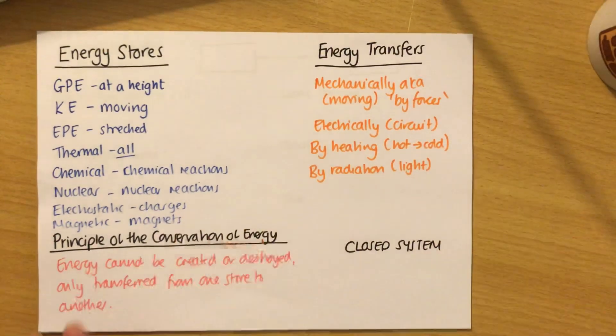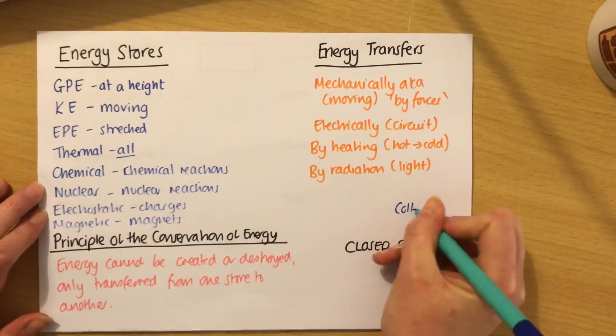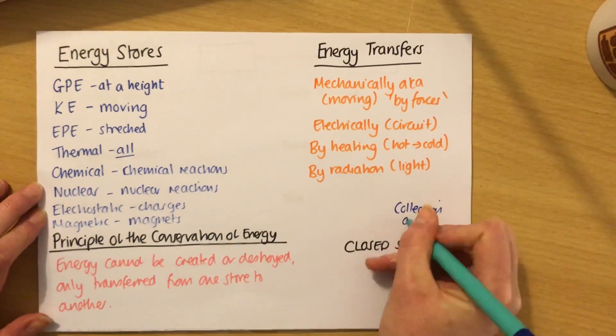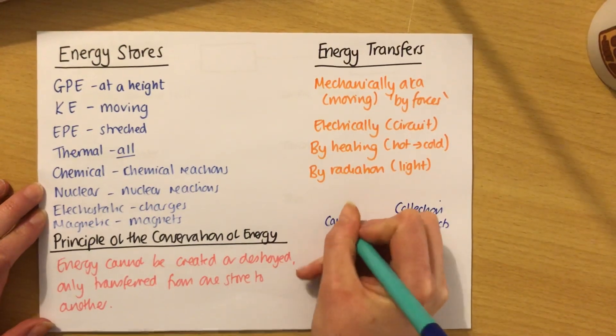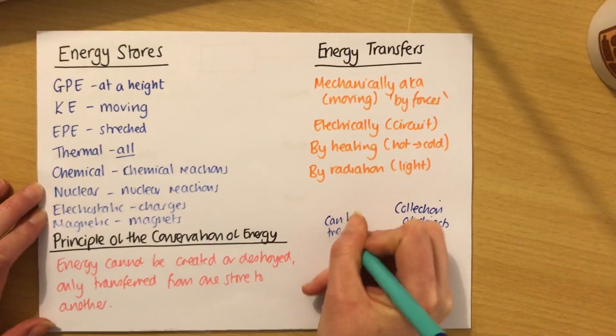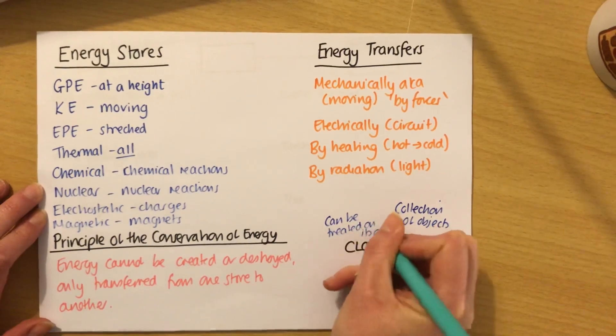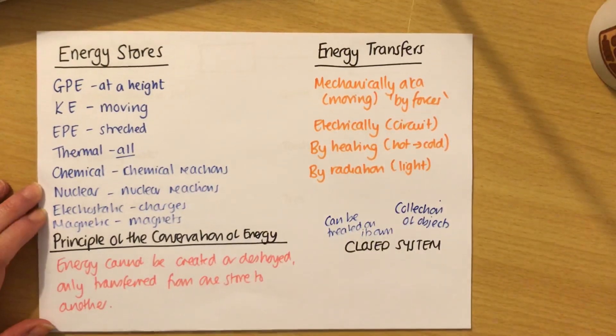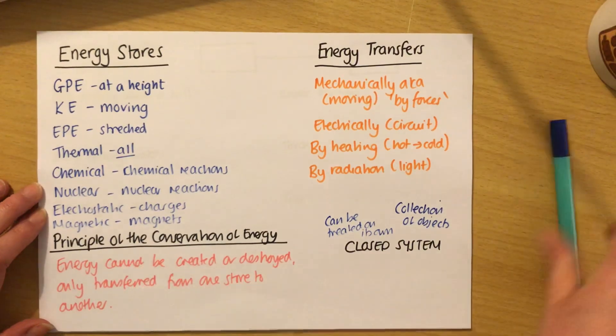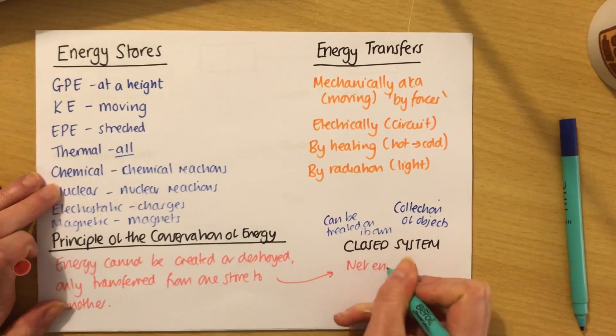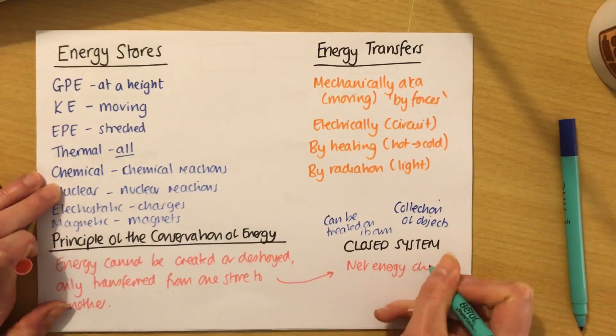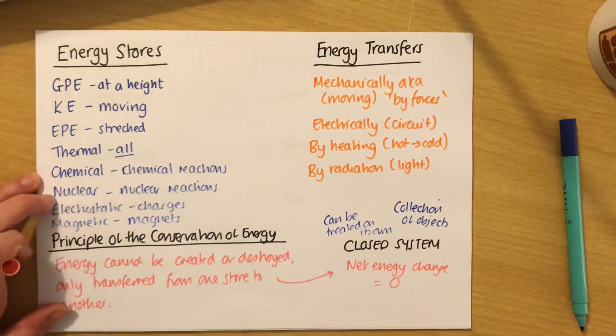And that brings me to the idea of a closed system. A closed system has two words you need to unpack. Firstly, a system is just a collection of objects. And a closed system is a collection of objects that can be treated on its own or in isolation. In a closed system, because of the principles of conservation of energy, what we can say is that the net energy change is zero.